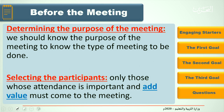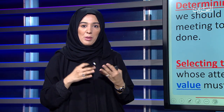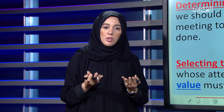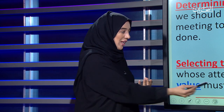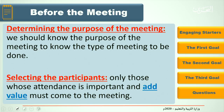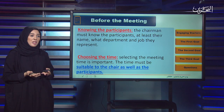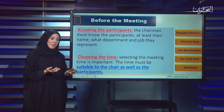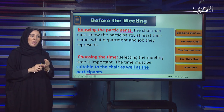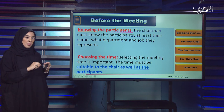Then we select the participants. If our meeting is related to budgeting, for example, only those attendants who will add value are invited. The chairman must know the participants — at least their name, job title, and which department they are from.